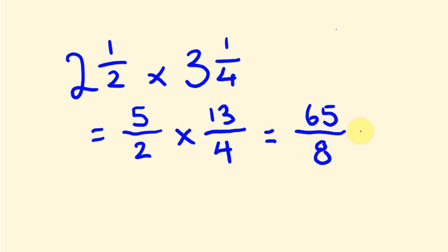We can change this further, because 65 over eight is an improper fraction — the top is bigger than the bottom — so we can change it back into a mixed number. This line here I think of as divide, so this means 65 divided by eight. Eight eights are 64, so it goes eight times with one left over. So we put that one over eight, giving us eight and one eighth.